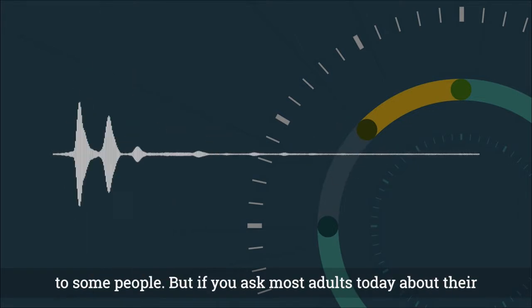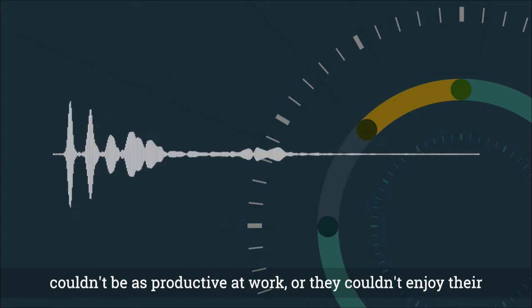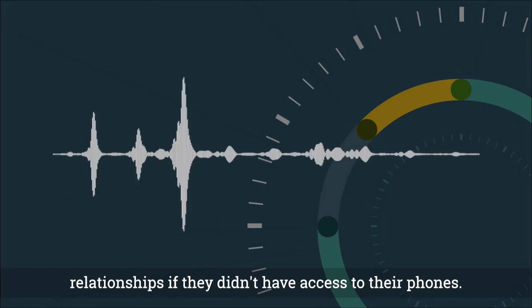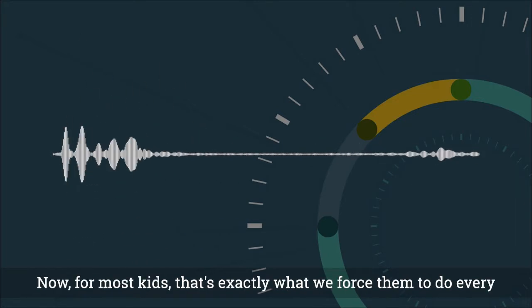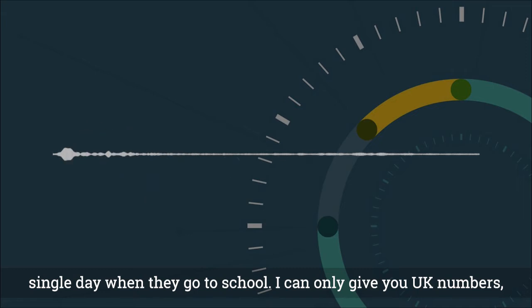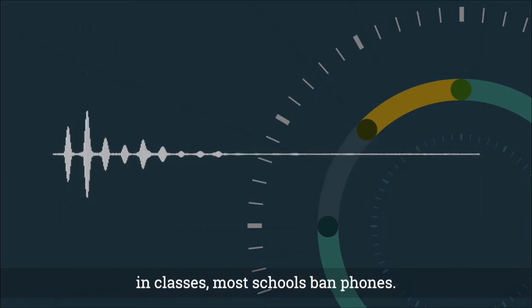But if you ask most adults today about their relationship with their smartphone, most adults would say that they couldn't be as productive at work or they couldn't enjoy their relationships if they didn't have access to their phones. Now, for most kids, that's exactly what we force them to do every single day. When they go to school, I can only give you UK numbers, but 95% of the schools in the UK today restrict access to technology and classes. Most schools ban phones.